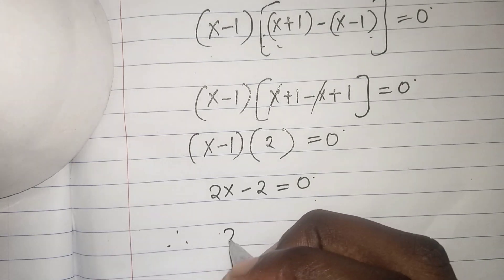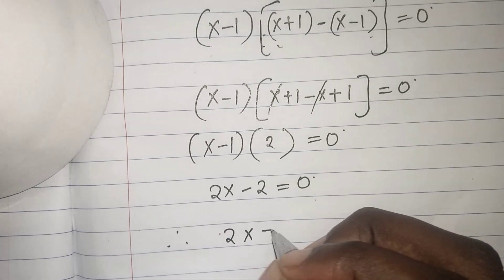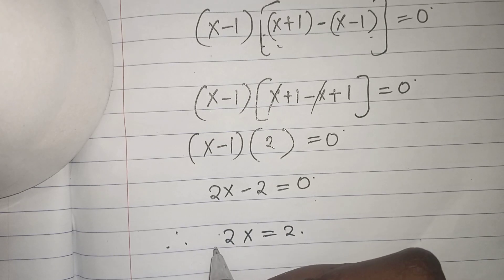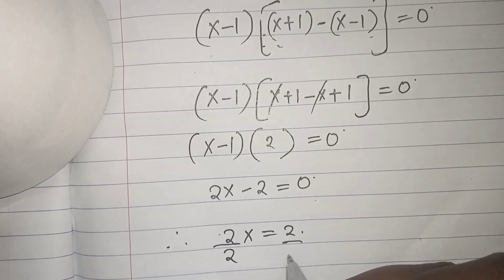Therefore, 2x = 2. To get the value of x, we divide both sides by 2.